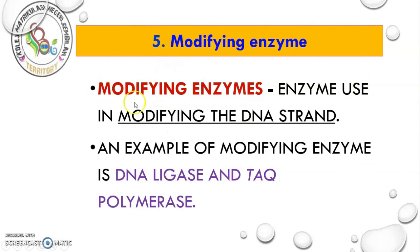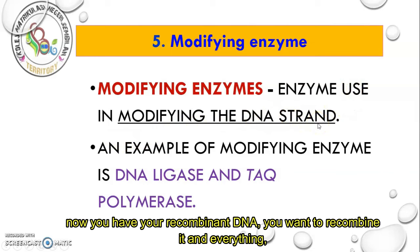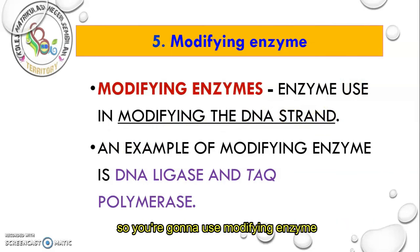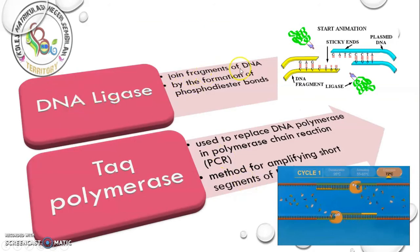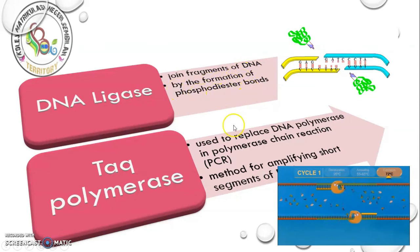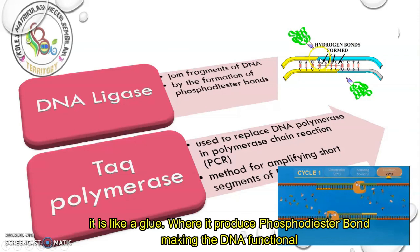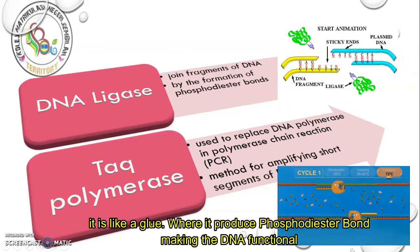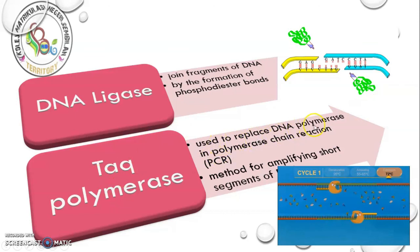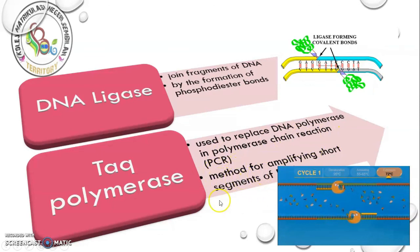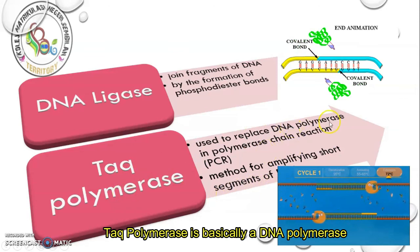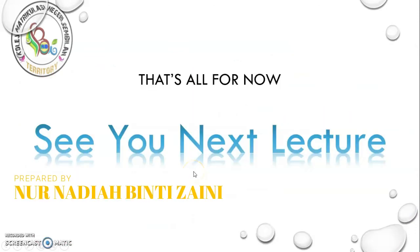The next tool is modifying enzymes, used for modifying the DNA strand. An example of a modifying enzyme is DNA ligase and Taq polymerase. DNA ligase joins DNA fragments together by forming phosphodiester bonds — it is like a glue that makes the DNA functional. Taq polymerase is used to replace DNA polymerase in the polymerase chain reaction (PCR), a method of amplifying short segments of DNA. That's all for now — see you in the next lecture. Keep it up, guys!